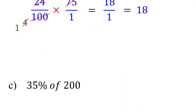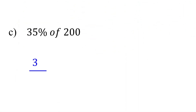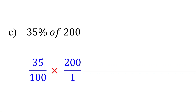Let's continue with some bigger numbers. 35% means 35 over 100. Of implies multiplication. 200 is the same as 200 over 1. Next, simplify the fractions. 200 divided by 100 is 2, and 100 divided by 100 is 1.